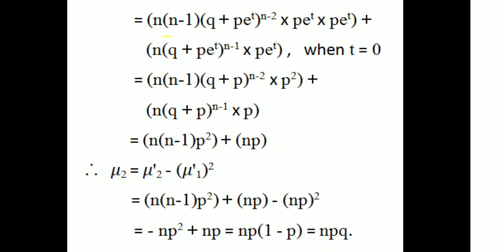Applying the product rule, we get n times n minus 1 times q plus p e raised to t, all raised to n minus 2, times p e raised to t, times p e raised to t, plus n times q plus p e raised to t, all raised to n minus 1, times p e raised to t.